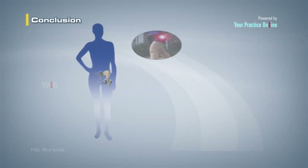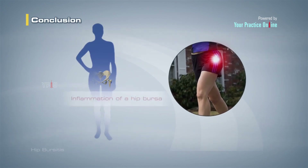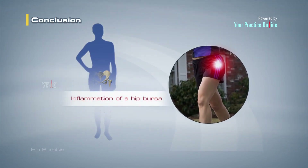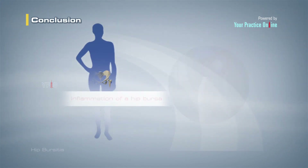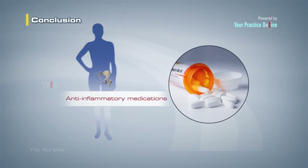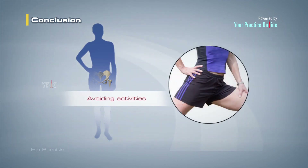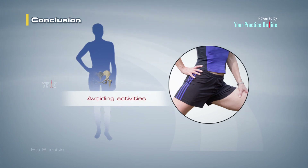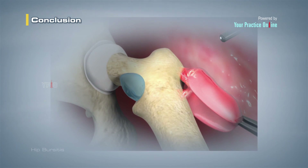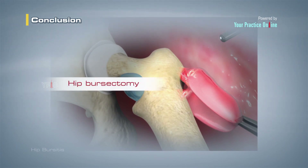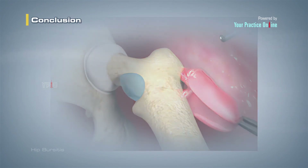Hip bursitis is a painful condition from inflammation of a hip bursa. Anti-inflammatory medications, rest, and avoiding activities that aggravate the hip pain are important factors in resolving hip bursitis. In severe cases not relieved by conservative treatment measures, surgical removal of the bursa — hip bursectomy — is an option for treatment.